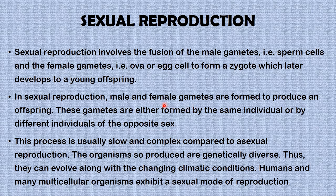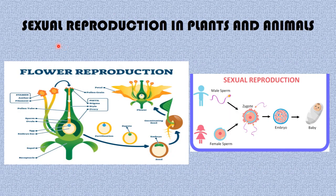These gametes are either formed by the same individual or by different individuals of the opposite sex. This process is usually slow and complex compared to asexual reproduction. The organisms produced are genetically diverse, thus they can evolve along with the changing climatic conditions. Humans, being multi-cellular organisms, exhibit a sexual mode of reproduction.